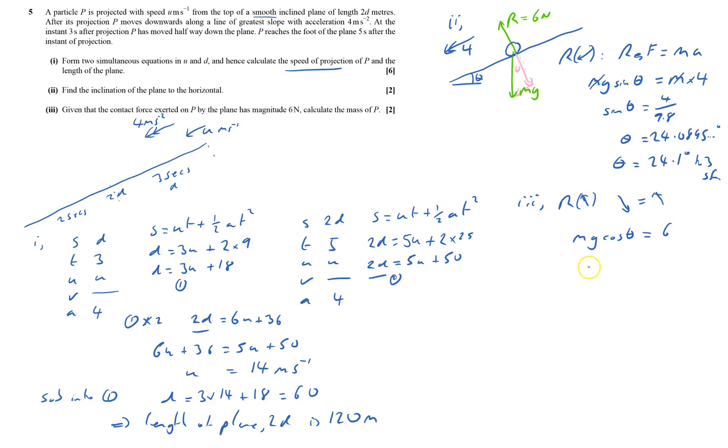And therefore m will equal 6 over 9.8 times by cos of 24.089, and m equals 0.67065 kilograms, so m equals 0.671 kilograms to three significant figures. And that's question five done.